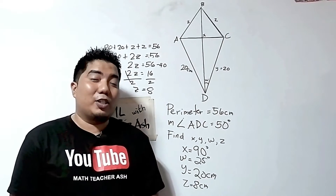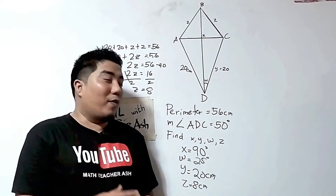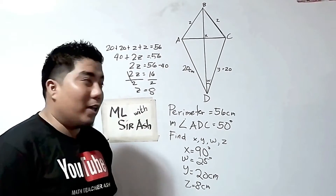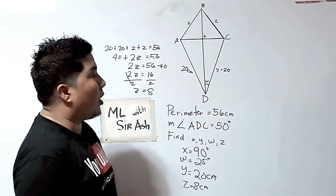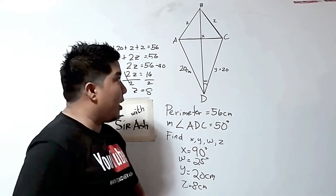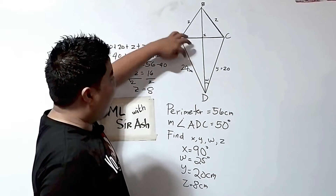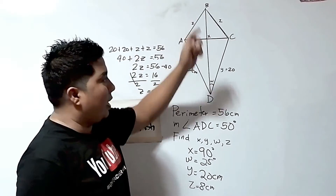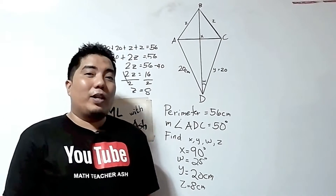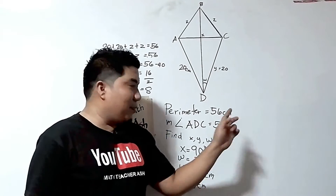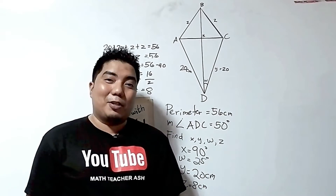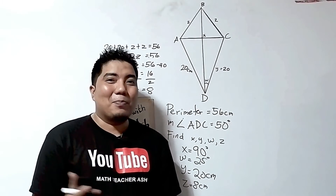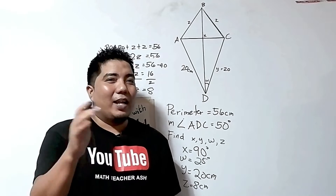We have now answered all of our problems in this given figure. If you want to check your answer for Z, you can verify: 20 plus 20 plus 8 plus 8 equals 56 centimeters, which is your perimeter.